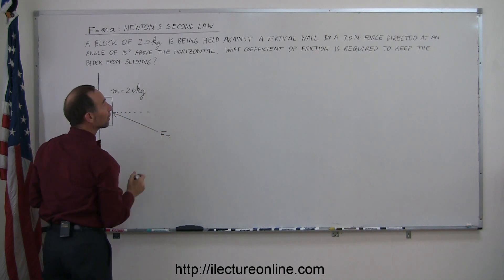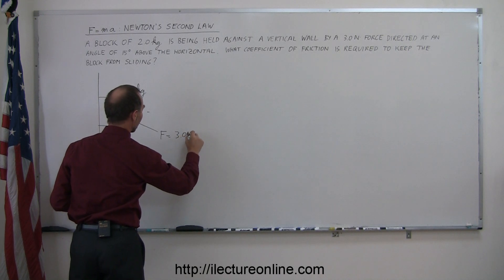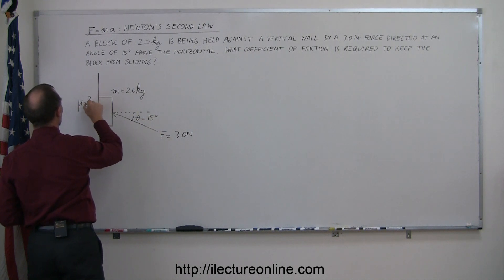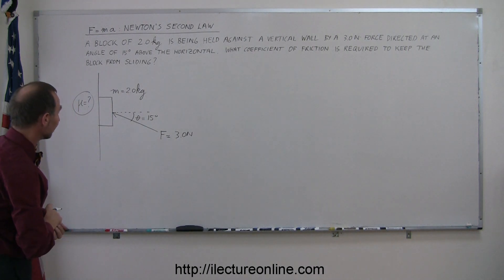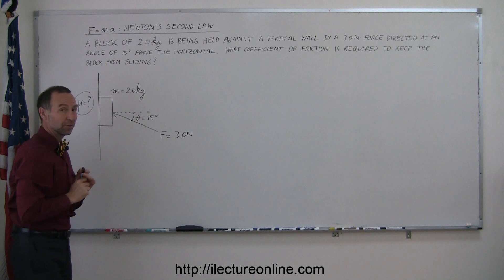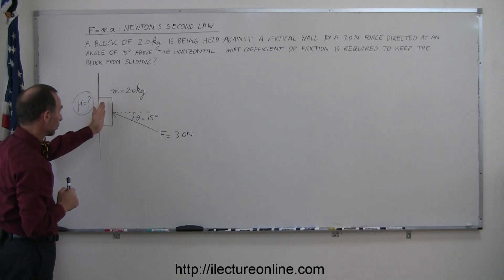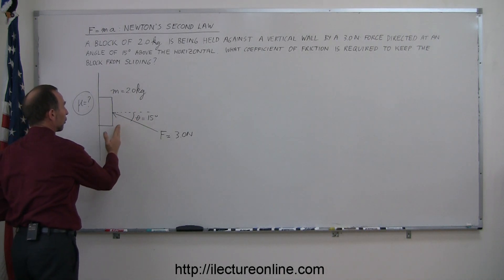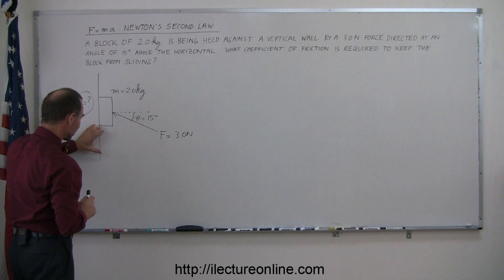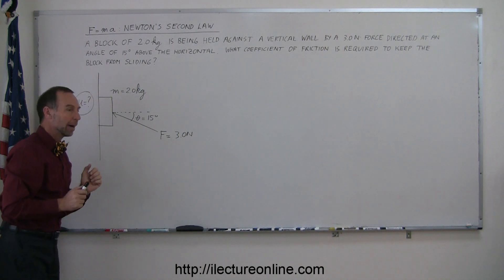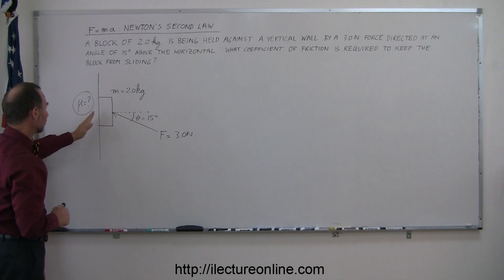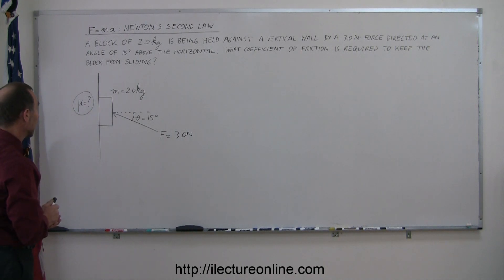The force has a magnitude of three Newtons, and the angle theta is equal to 15 degrees. The question is: what is the coefficient of friction to keep the block from sliding? The block is held against the wall simply by this force. The weight of the block will cause it to slide down, while the vertical component of the force will try to push the block up. With some friction between the wall and the block, it will prevent sliding, and we need to figure out how big that has to be.